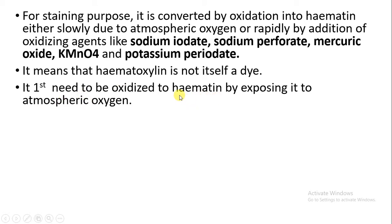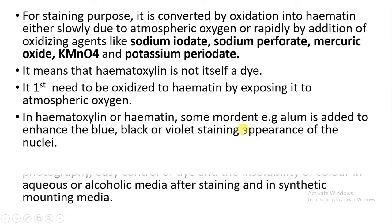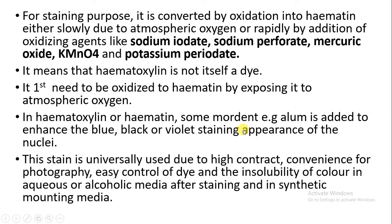Hematin, due to exposure to atmospheric oxygen, gives coloration to the cellular component. In hematoxylin — or rather hematin — there is also some use of a mordant substance, such as alum, which enhances the blue, black, or violet staining appearance of the nuclei. This gives us an even darker coloration in the nuclear component.